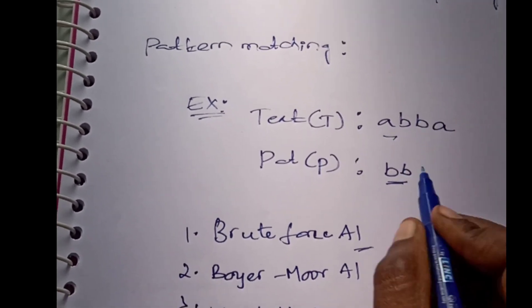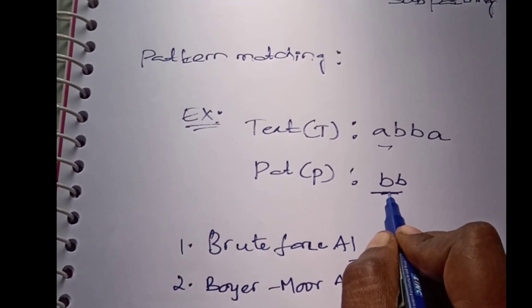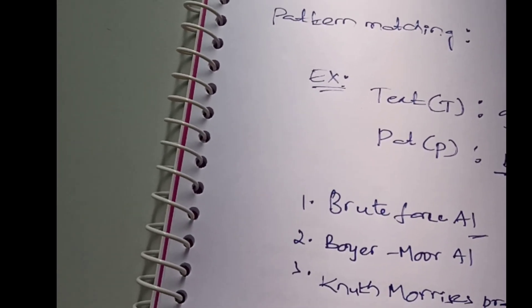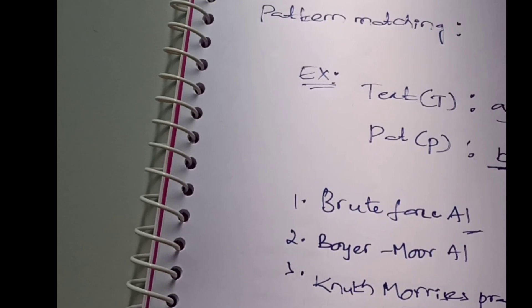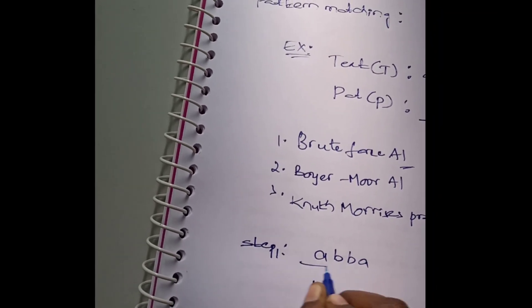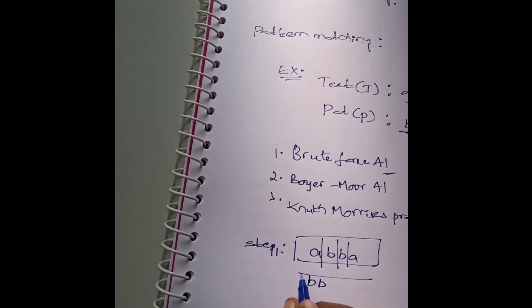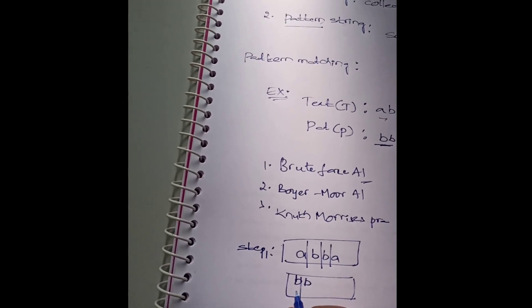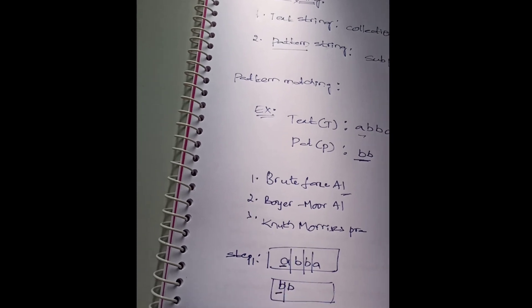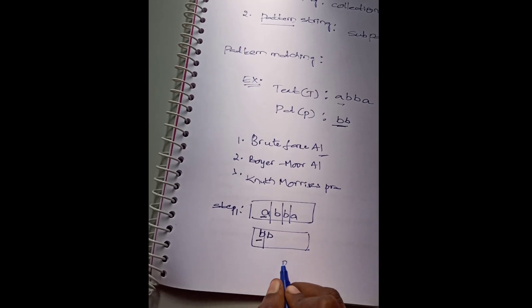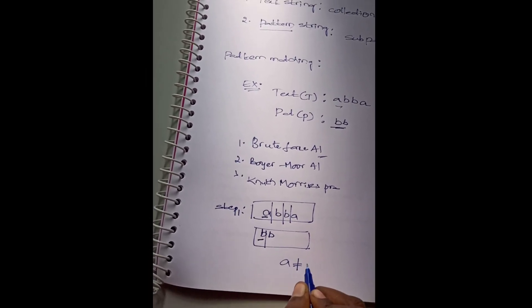Using brute force, we check the first character of the text with the first character of the pattern. In step one, we write the text and pattern. In the next line we write the pattern in a rectangular box. In this algorithm, first we compare the first letter of the text and the first letter of the pattern.